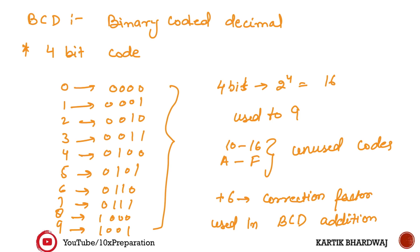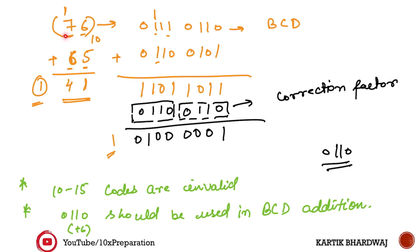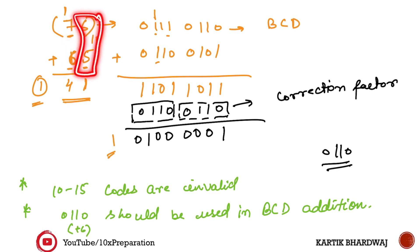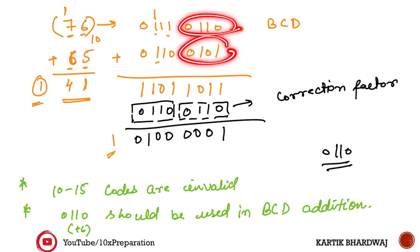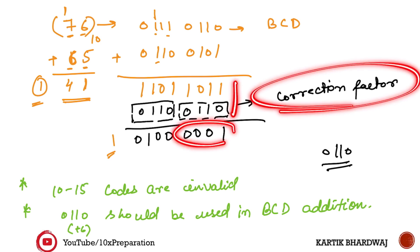Whenever you add two BCD numbers and get a result outside the valid range, you need to apply a correction factor. For example, 8 plus 8 equals 16, which is 10 in hexadecimal — not a valid BCD number. In that case you need to add 6, which is the correction factor. So whenever you get a number that is not a valid BCD number, you must add the correction factor 0110.